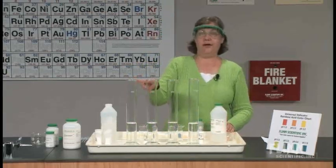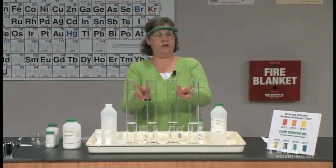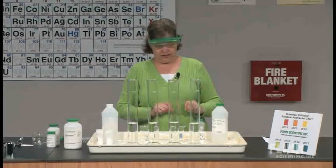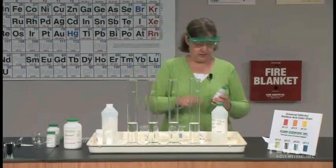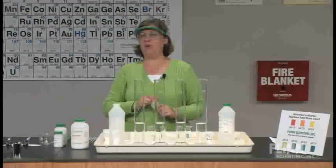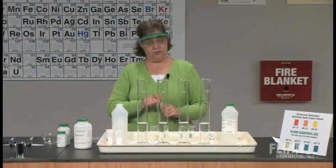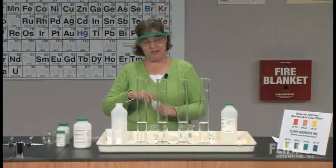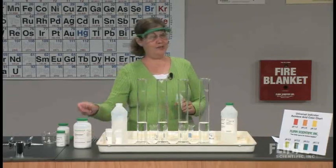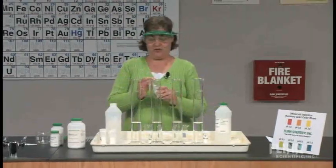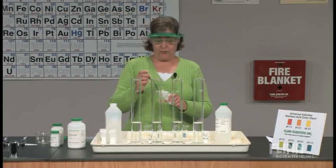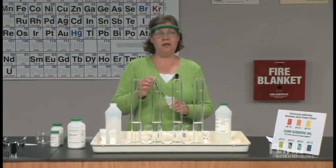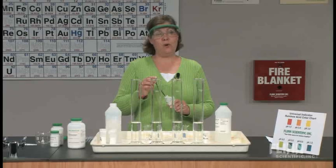Cylinders one and two have one molar hydrochloric acid. Cylinders three and four have one molar acetic acid. What I'm going to do next is add what we call rainbow acid universal indicator. This is a proprietary mixture we developed about 10 years ago. It's got a combination of five different indicators in it, which will give you a rainbow spectrum of color changes between pH 1 and 7.